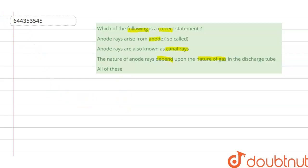So let us understand the answer now. The first sentence, anode rays arise from anode, this is a correct statement.